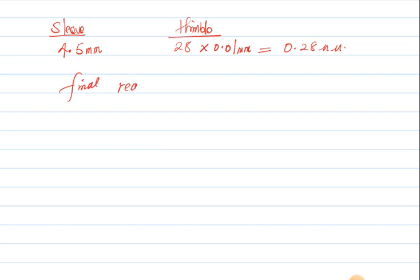So slowly and slowly, I'm sure you've understood now. So 4.5 millimeters plus 0.28 millimeters - the final reading is 4.78 millimeters.